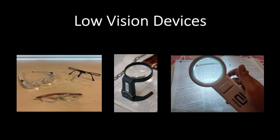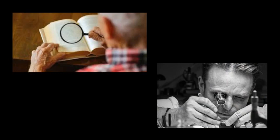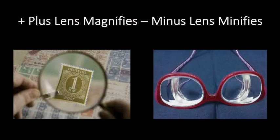Magnifiers are used to see and read small letters and figures. They are also used by watchmakers to see the small parts and screws of a watch. In simple words, a plus lens magnifies and a minus lens minifies.